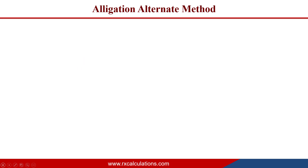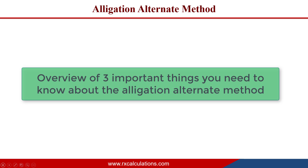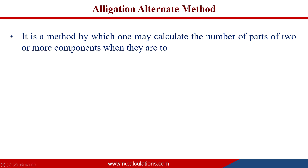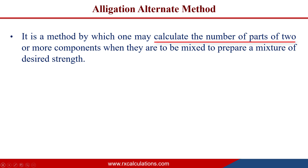Before I tell you why the alligation alternate method works, I'm going to give a brief overview of three important things you need to know about it. If you need a much deeper discussion, check out my other video — I'll put a link in the description. The alligation alternate method is a method by which you may calculate the number of parts of two or more components when they are to be mixed to prepare a mixture of a desired strength.